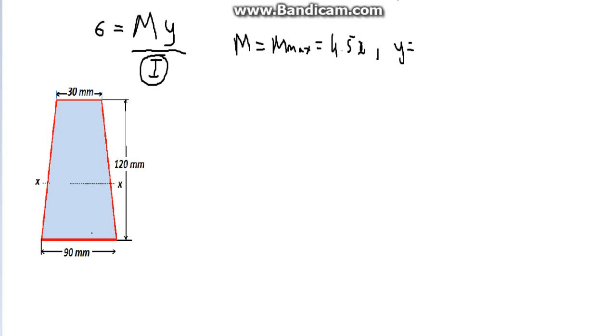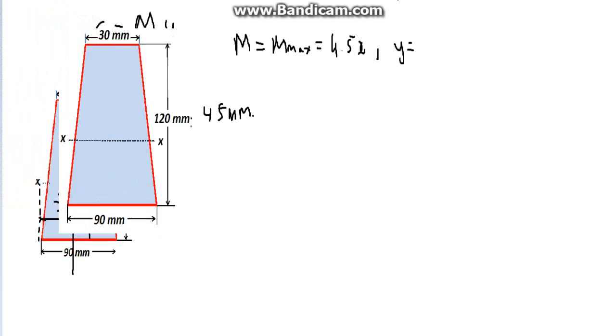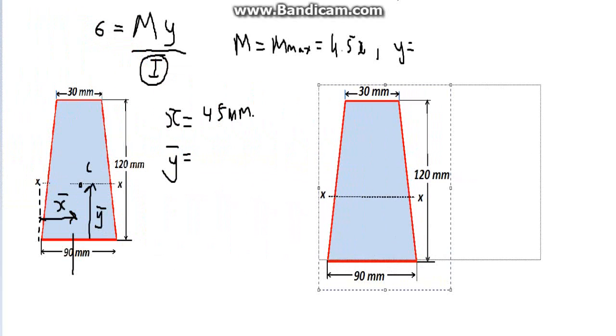Now, this distance here is what we want to find. What is Y equal to? So we know what X equals to. It's a redundant value, of course, half of 90. That's what X-bar equals to. We don't really need X. I just wanted to show you what it is. But what about Y? What is our Y distance to the neutral axis, the centroidal axis?